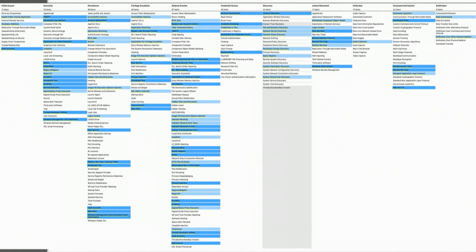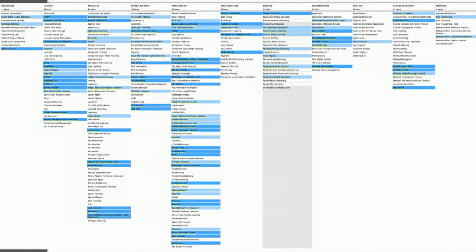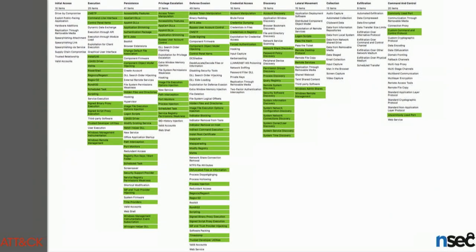A better approach would be to go by batch — select a number of techniques that you can soak for a week to a month, maybe five. When you're done and you have high confidence that you don't generate too many false positives, you put that into production and focus on the next five. Then there's Sysmon Modular from Olaf Hartong, which is a Sysmon configuration file where all the detections are mapped to MITRE ATT&CK. If you're more of an OSQuery type of person, do not worry — Filippo Martini has you covered with OS Attack.